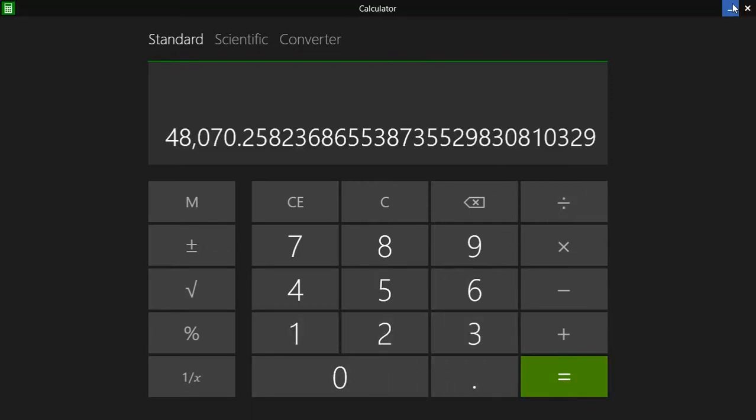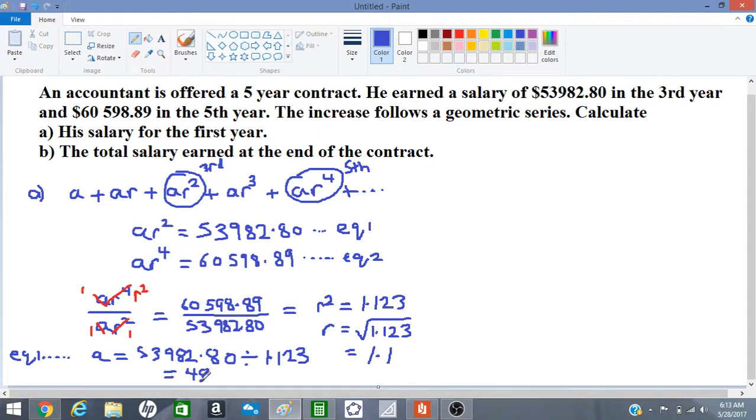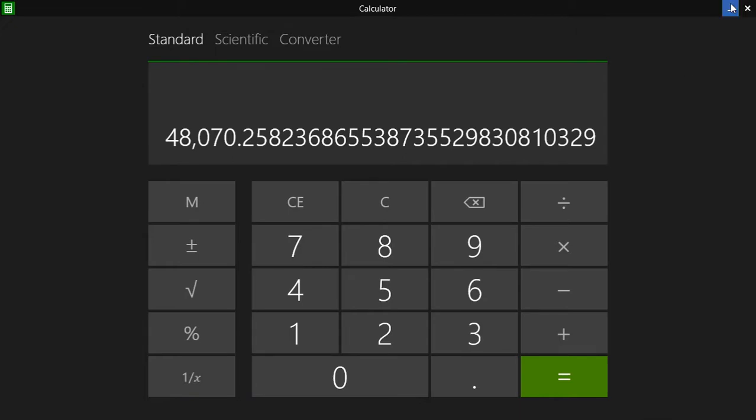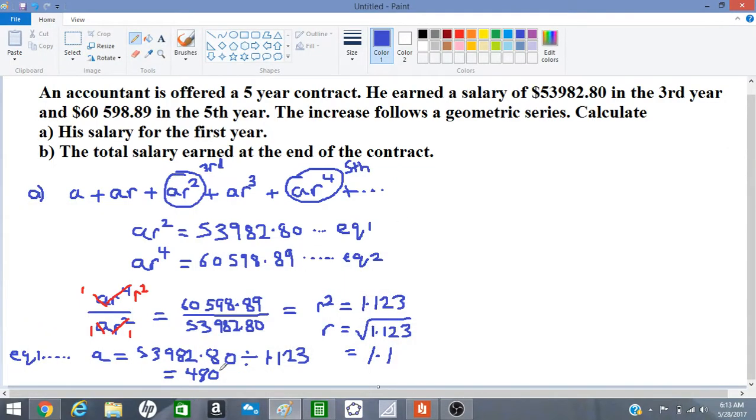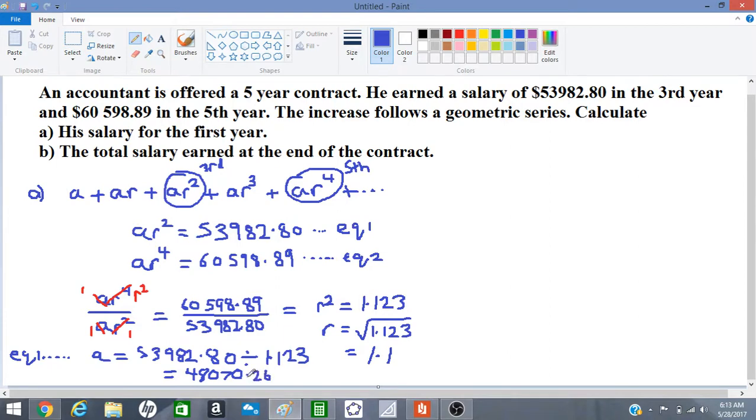So we have 48070.26. Okay, so this is our value in terms of money. This is the salary for the first year, which is the first term of the sequence, and that answers part A. So let us look at part B now.